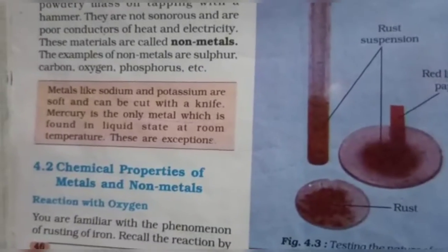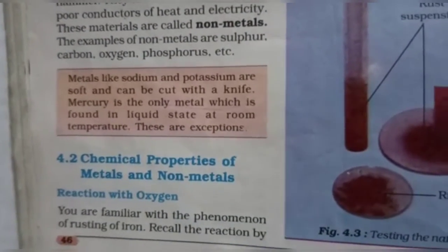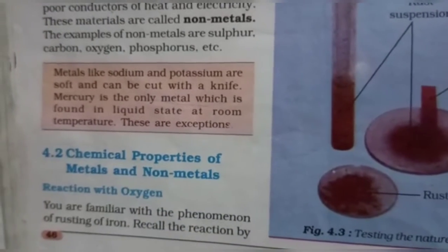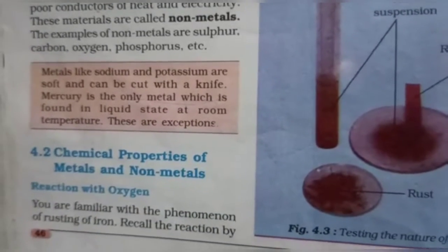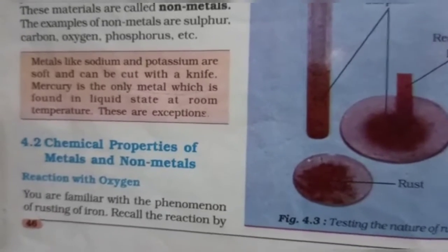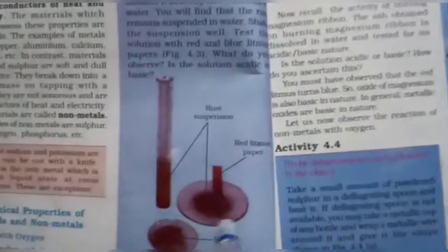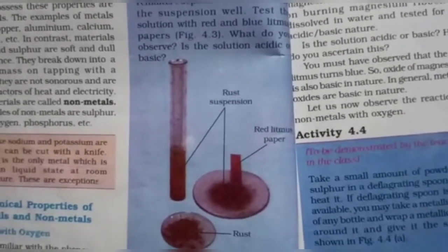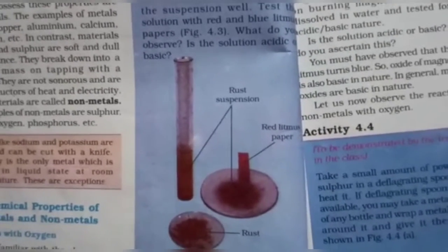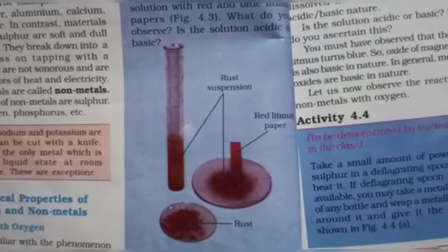Now the next section: chemical properties of metals and non-metals. The first chemical property is reaction with oxygen. Metals like iron, when left in the atmosphere, will develop rust. The oxygen in the atmosphere reacts with the metal and produces rust.